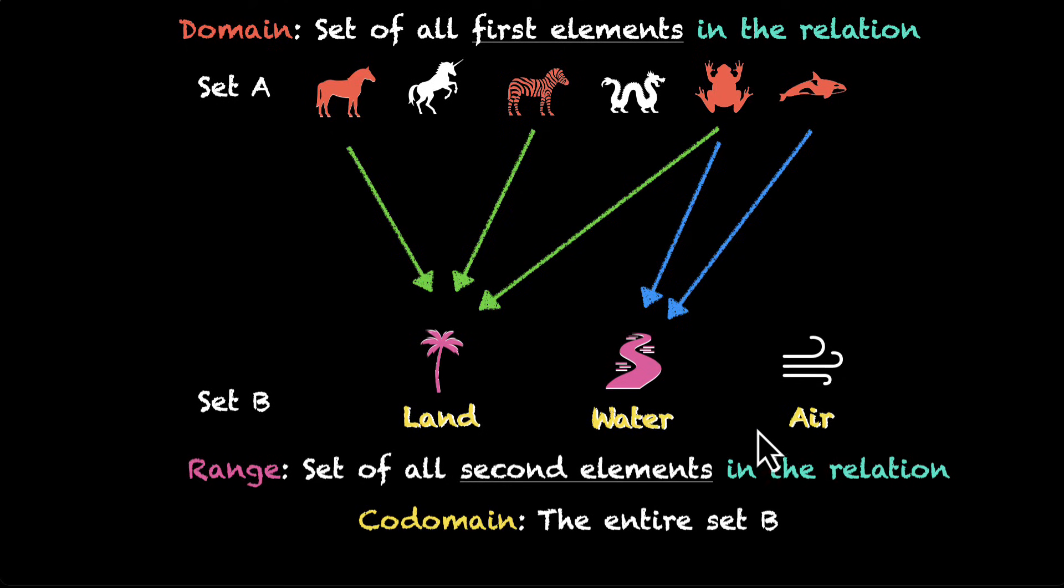So let's recap. The domain is set of all first elements in the relation. So all the things from set A that are related to something in set B, they'll be part of domain. And all the things that are related in set B, they'll be part of range.